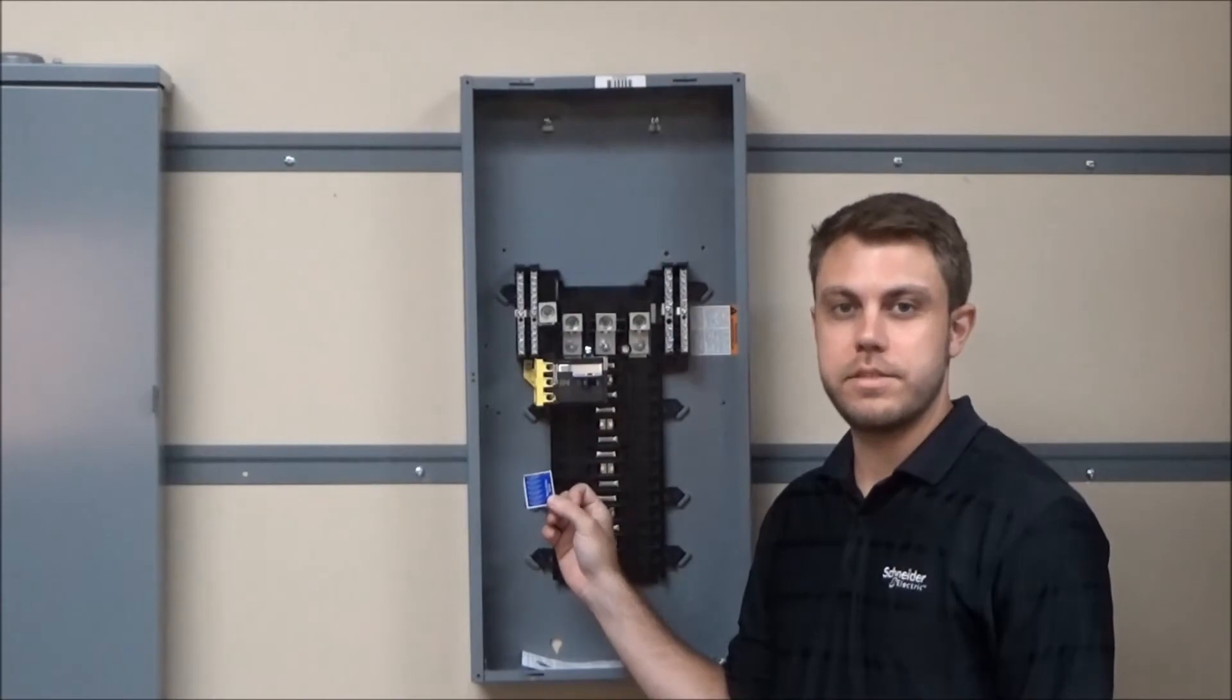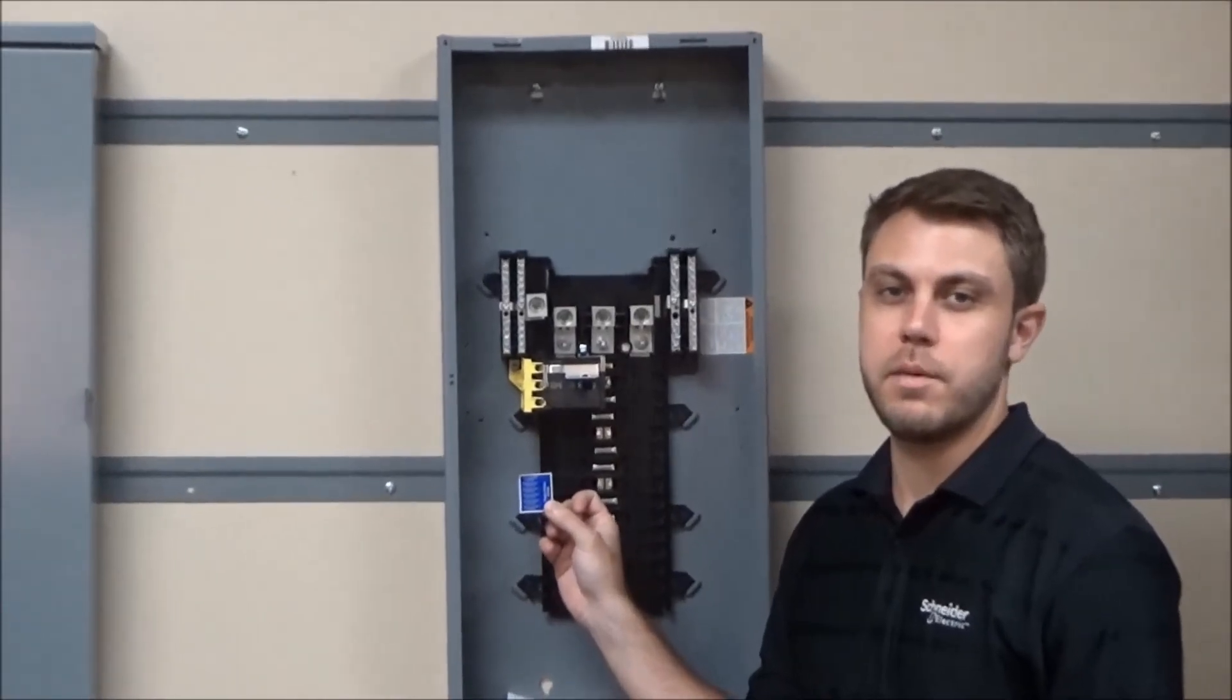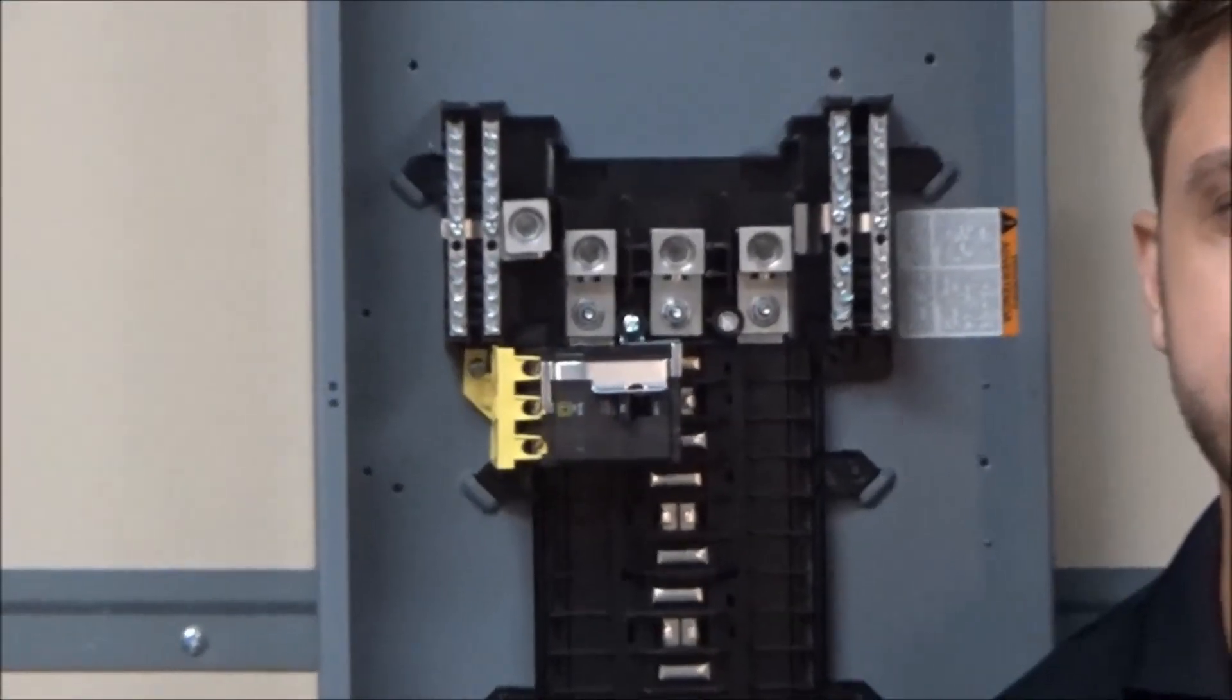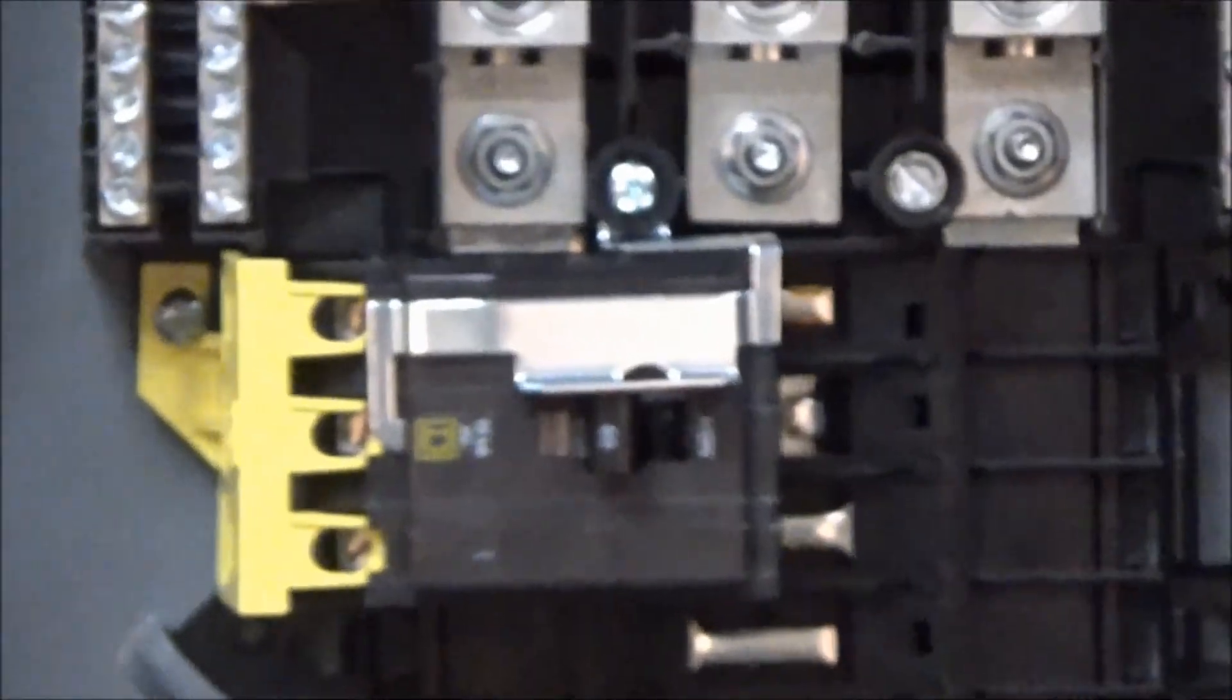The last step is to install the service disconnect labels to your load center. Now you have the PK-SB3-BF installed which meets the new UL and NEC code requirements for service entrance.